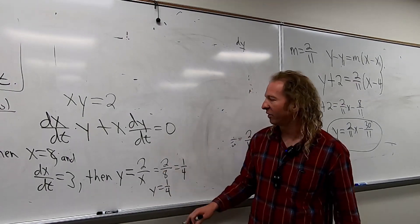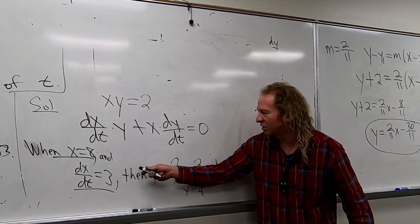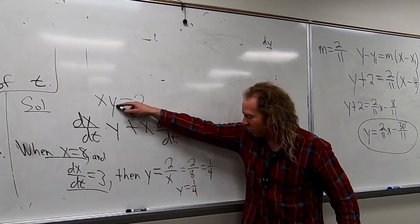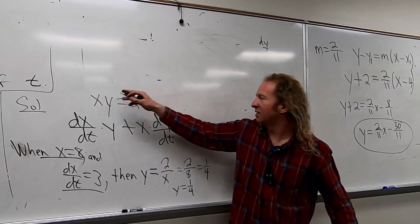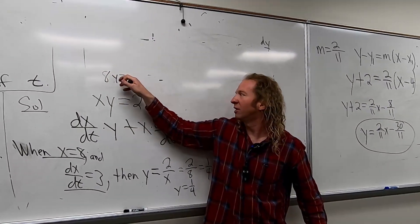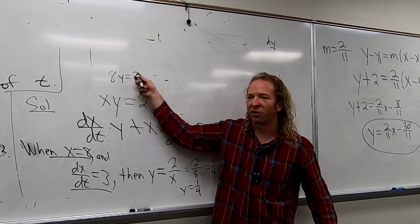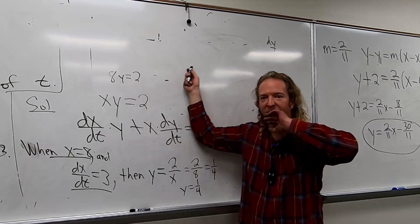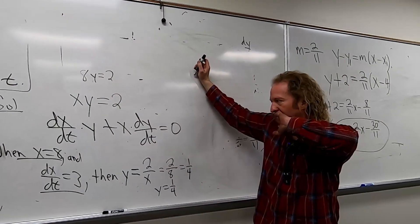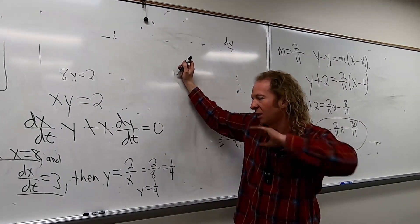All right, now I'm going to plug everything in. So when x is 8, we have this. And then you can take this 8 and just put it here. I was going to do it like this. I was going to do 8y equals 2. I could have done that as well. And then solve for y, right? Yeah? You have dx/dt as 3, but it's 13. 13. Thanks.